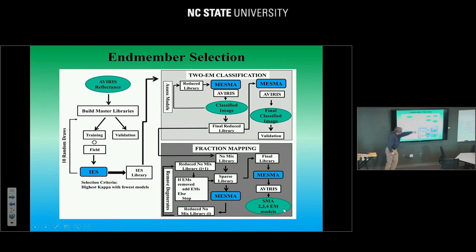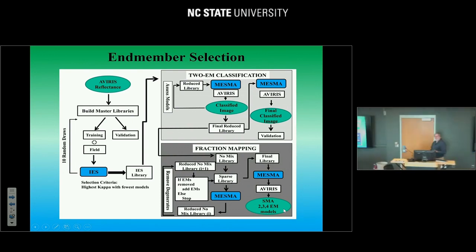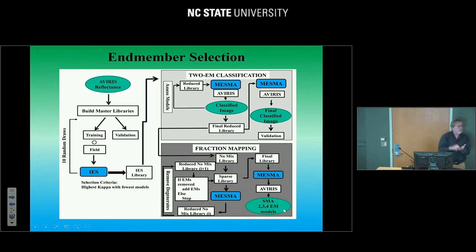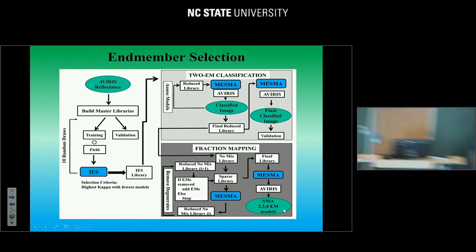We then do fraction mapping, which is a different process than classification. We want to know the fractional cover. For example, one of your classes might be an orchard, but an orchard may not be pure — it could be a mixture of trees and soil. That means the end-member you picked to map orchards may be a terrible end-member for fractional cover mapping. So you want to remove those mixed end-members to make the no-mix library. You then still end up with several hundred spectra and need to determine whether you really need 60 different kinds of green vegetation, or whether a subset of 15 would produce exactly the same map due to spectral degeneracy.